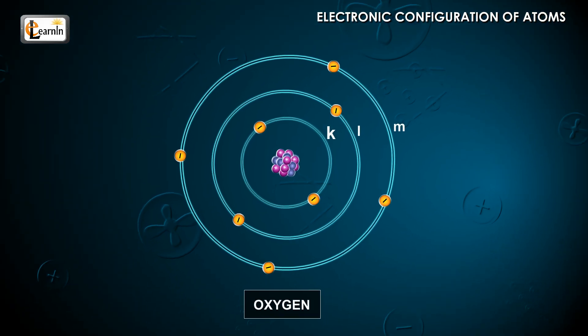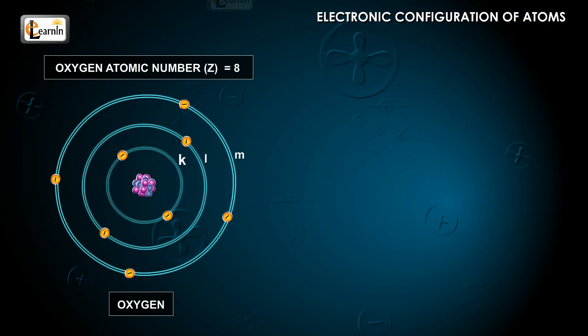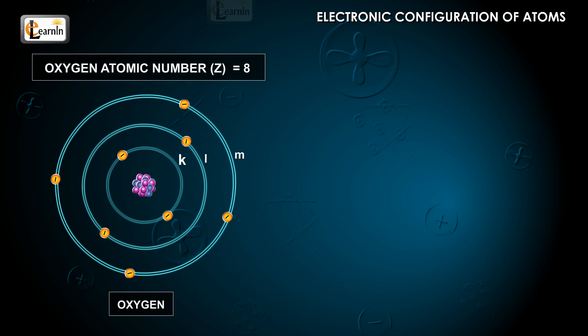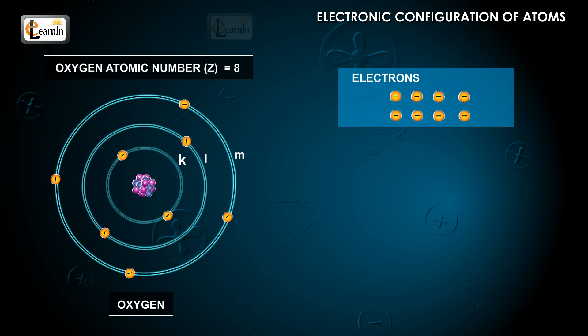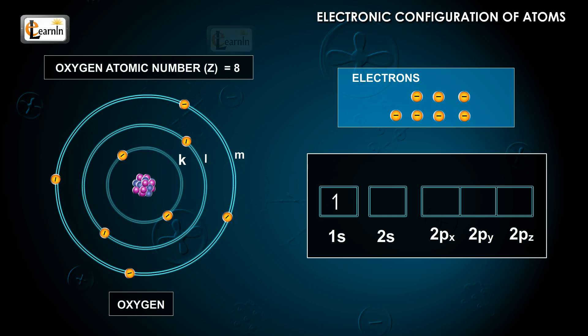Let's use an example to understand Hund's rule. Consider the element oxygen, with z equals 8. It has 8 electrons. The first electron goes into the 1s orbital of the K shell. The second electron will be paired up with the first electron in the same 1s orbital. Similarly, the third and fourth electrons will occupy the 2s orbital of the L shell.